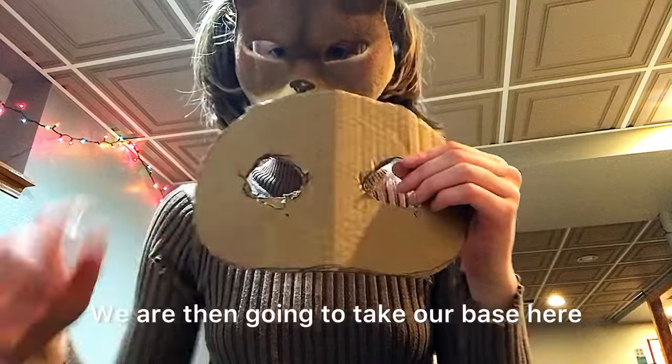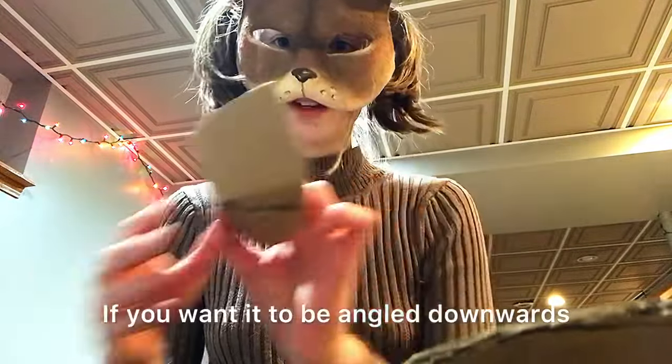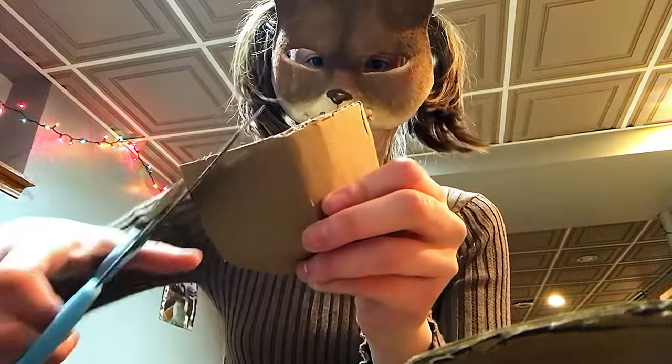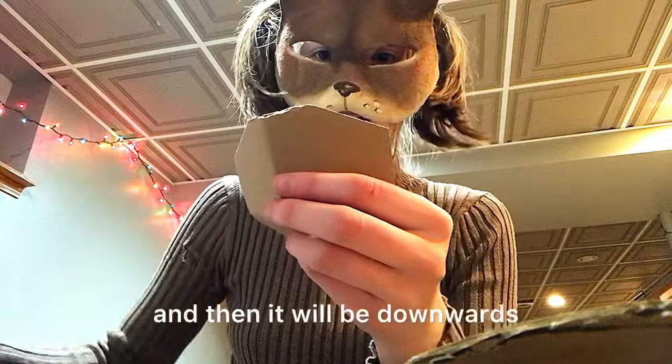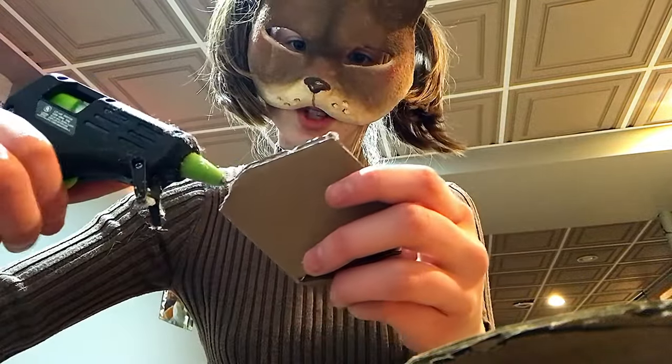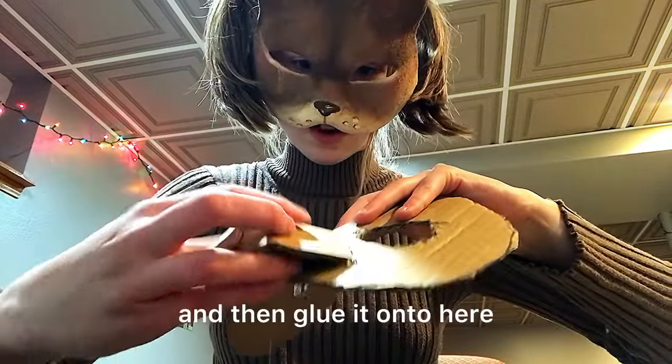We are then going to take our base here and glue this onto the base. If you want it to be angled downwards, you can trim the edges of these at an angle, and then it will be downwards. So, I'm going to add glue along the edge and then glue it onto here.